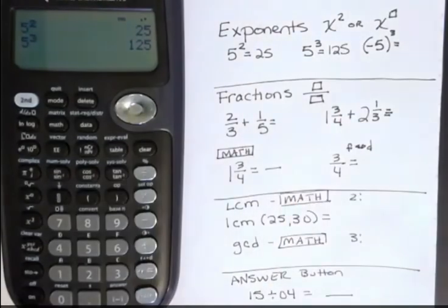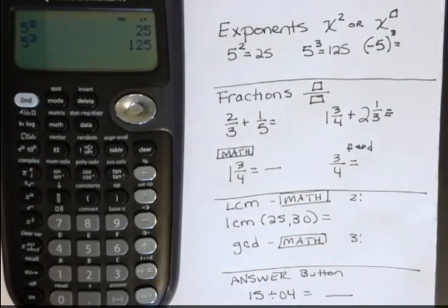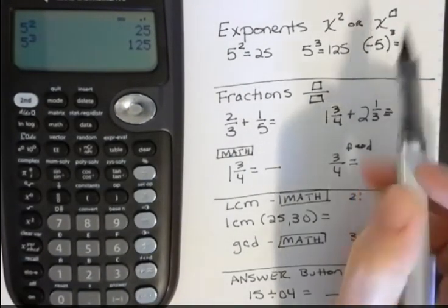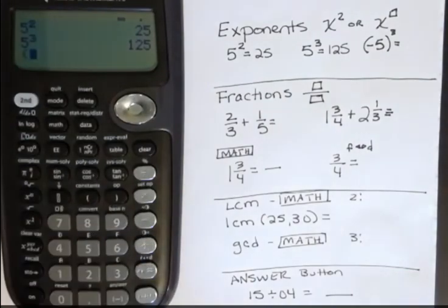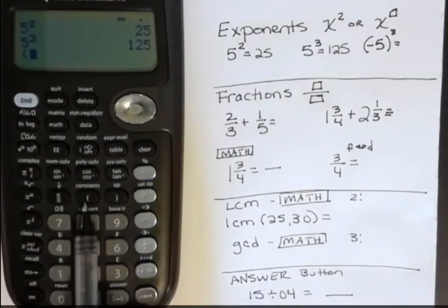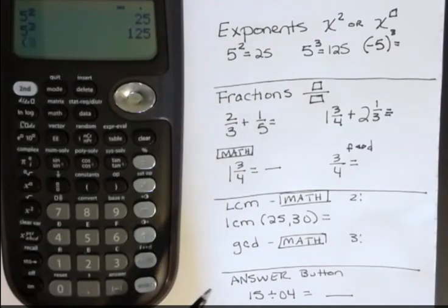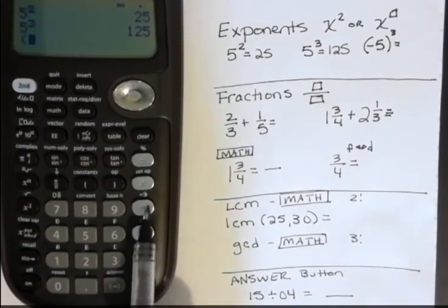And if you want to take negative 5 to the third power, that's different because you have to tell the calculator that it's negative 5, the entire quantity to the power. So we can come over here and put parentheses. That's just above the 8, and then hit the negative button, and the negative button is down here at the bottom, not the subtraction button, but the negative.